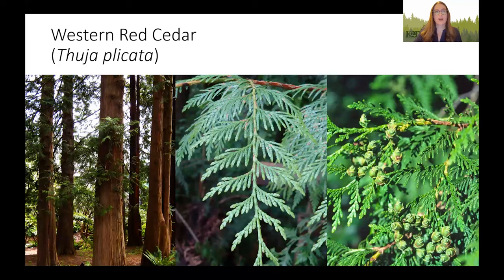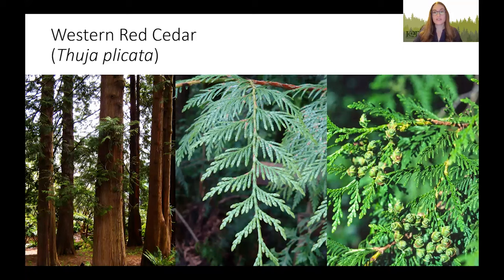Next, we have Western Red Cedar — a beautiful conifer with drooping branches that hang like a skirt and disease-resistant bark that is a beautiful red to grayish color. They grow to an average of about 150 feet tall, and are used by 45 different butterfly and moth species in their larval state, making them a wonderful tree for attracting birds.